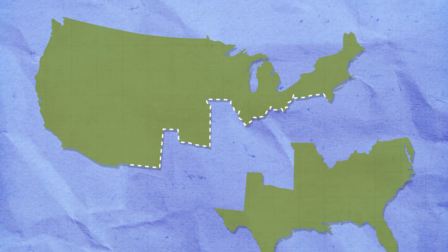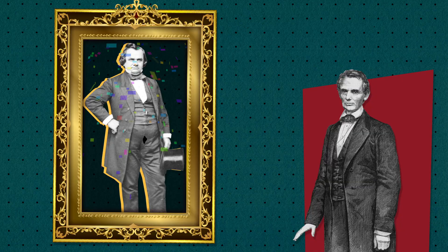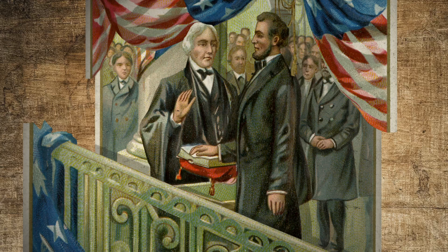Although Lincoln lost to Douglas in the race for the Senate, the debates raised his profile on the national stage and set him up for a run at the White House. In 1860, he became the first Republican to be elected president, with all of his electoral votes coming from northern states.